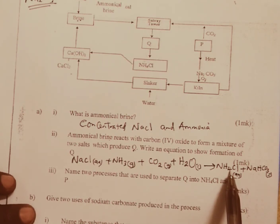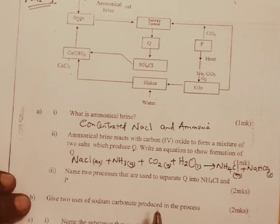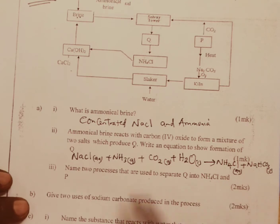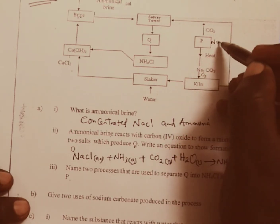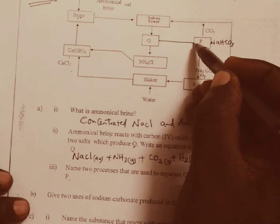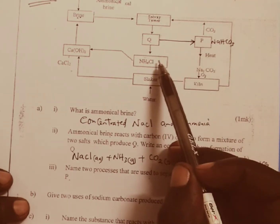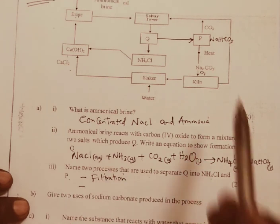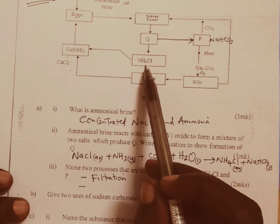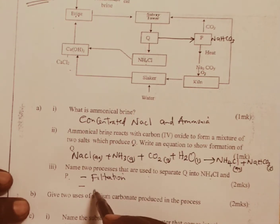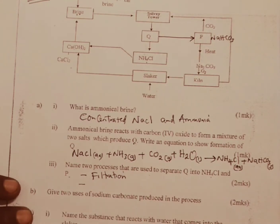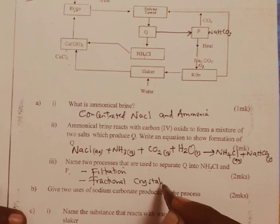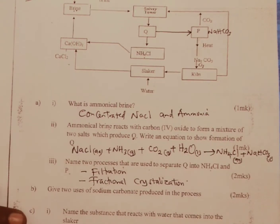Since one product is in solution and another is a solid, the two are separated using filtration. Name two processes used to separate Q into ammonium chloride and P, where P is sodium hydrogen carbonate. Number one: we use filtration. Number two: since sodium hydrogen carbonate has to crystallize to be separated from a solution of ammonium chloride, we use fractional crystallization.